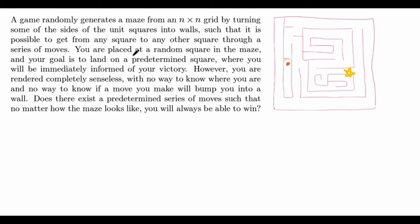You are placed at a random square in the maze, and your goal is to land on a predetermined square where you will be immediately informed of your victory. However, you are rendered completely senseless with no way to know where you are and no way to know if a move you make will bump you into a wall. Does there exist a predetermined series of moves such that no matter how the maze looks like, you will always be able to win?